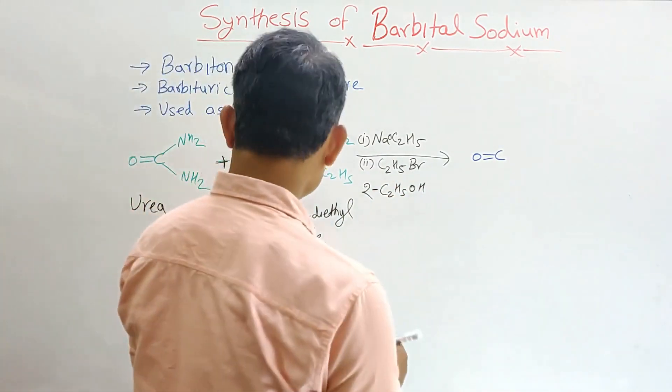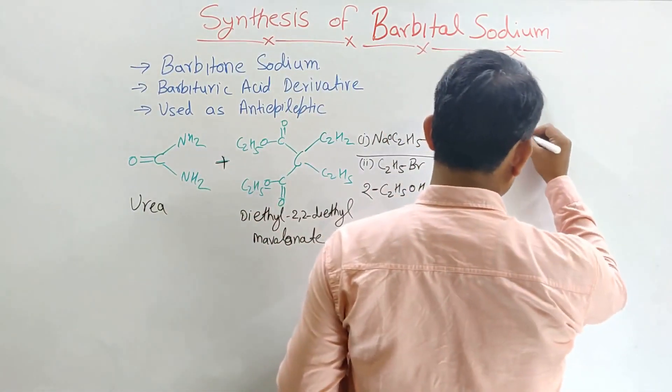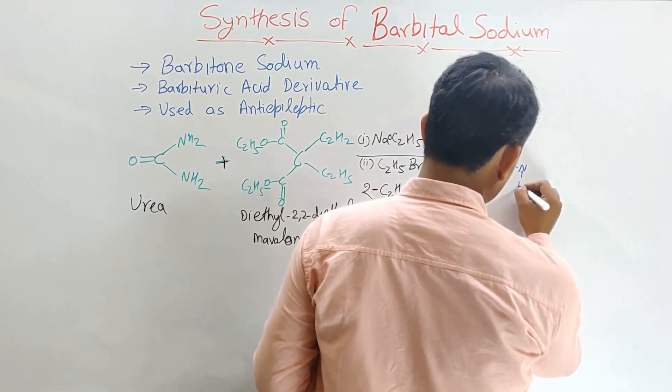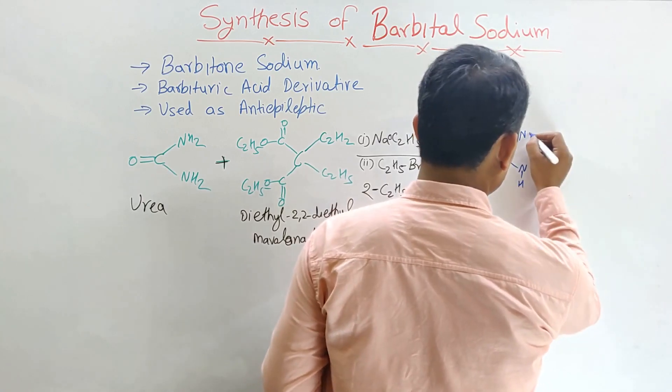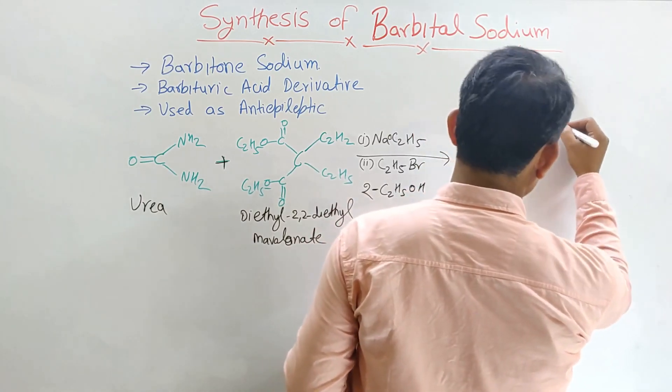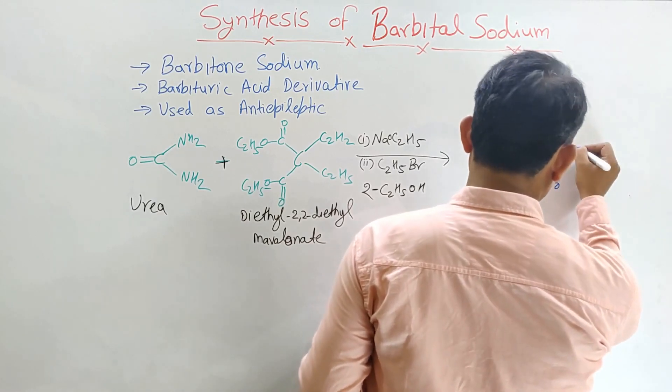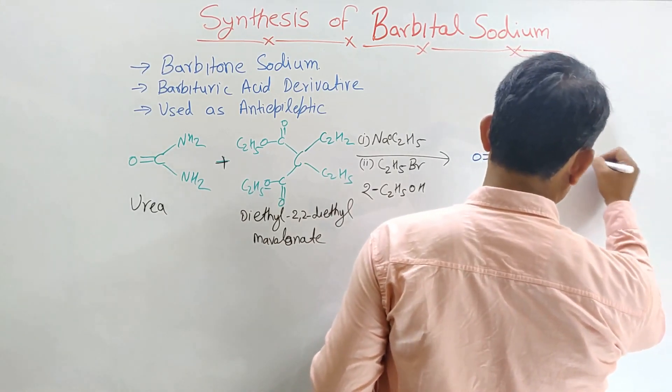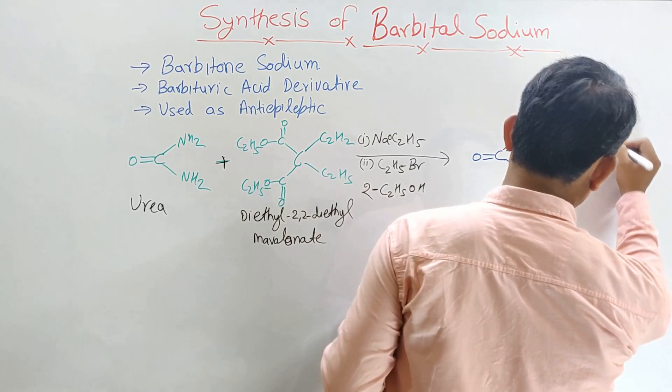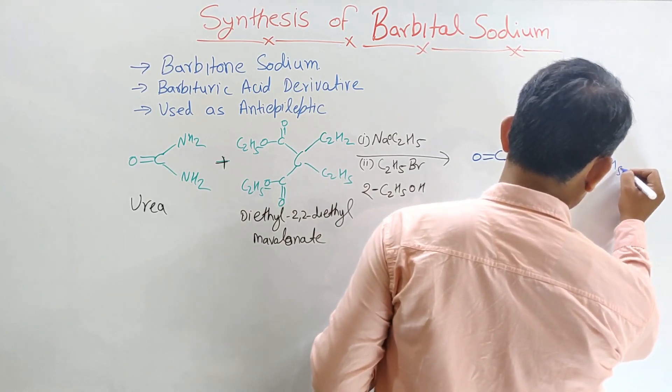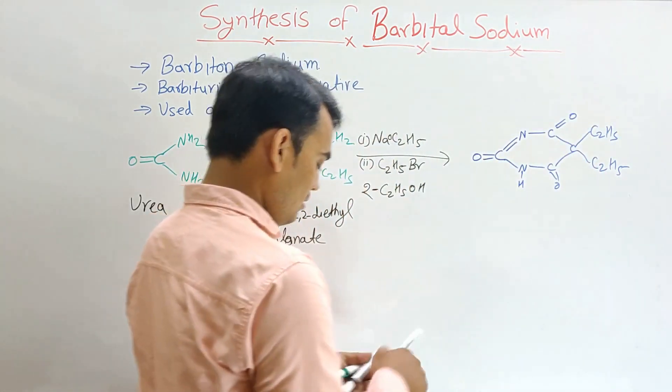And finally, it becomes like this. C over O, N, here NH. It becomes the double bond. And here, C. Here, have the ethyl bromide. This is the barbitone.